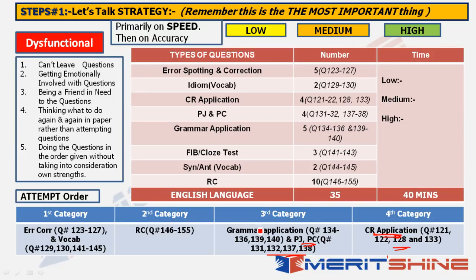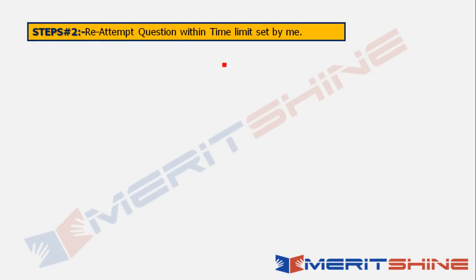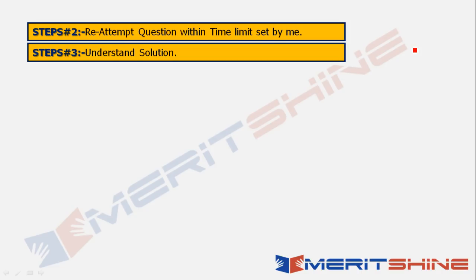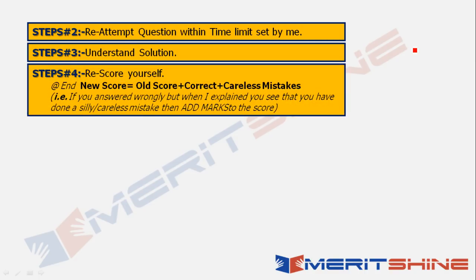Now we retake the paper — this was Step 1. Step 2 is to reattempt the questions in the same order. I'll give you a question with a time limit displayed on screen. You pause the video for that many seconds, attempt the question, then resume for the solution. Step 3 — understanding the solution — runs alongside. Step 4, the most important step, is to rescore yourself.